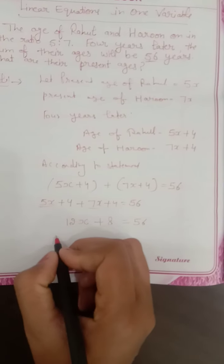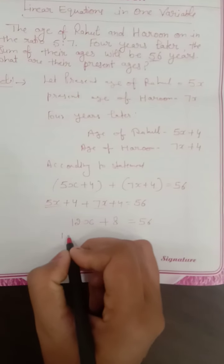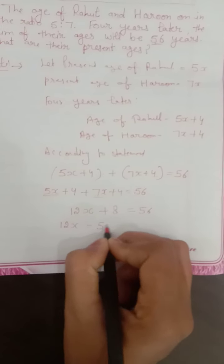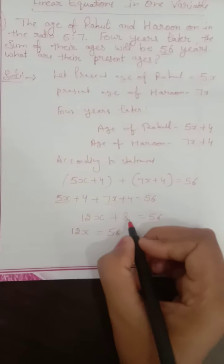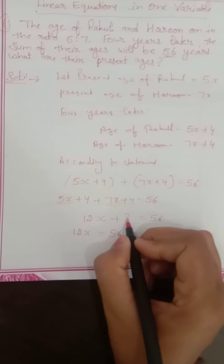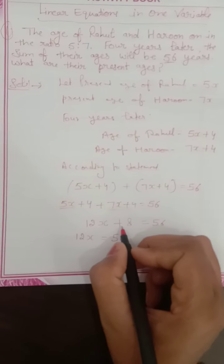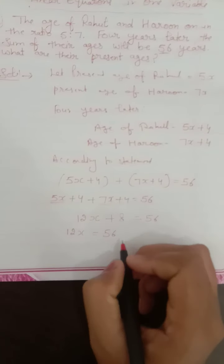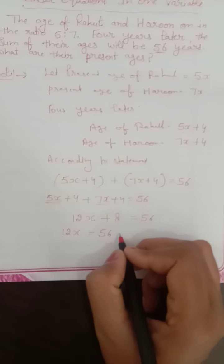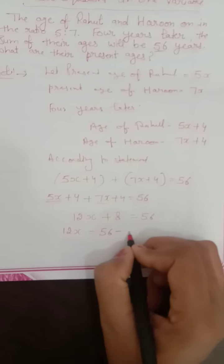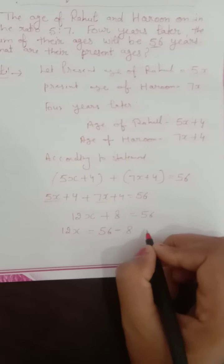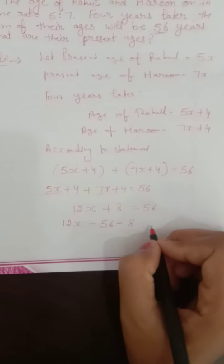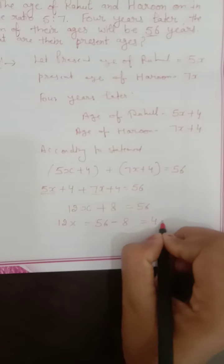Next, we transpose. The plus 8 moves to the other side and becomes minus 8. So we do 56 minus 8, which gives us 48. Therefore 12x equals 48.